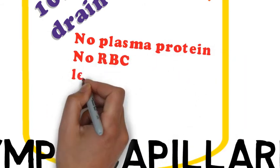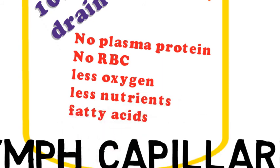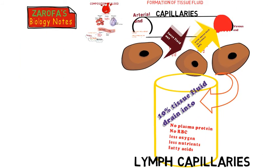In this lymph there is no plasma protein, no red blood cells, less oxygen, and less nutrients.